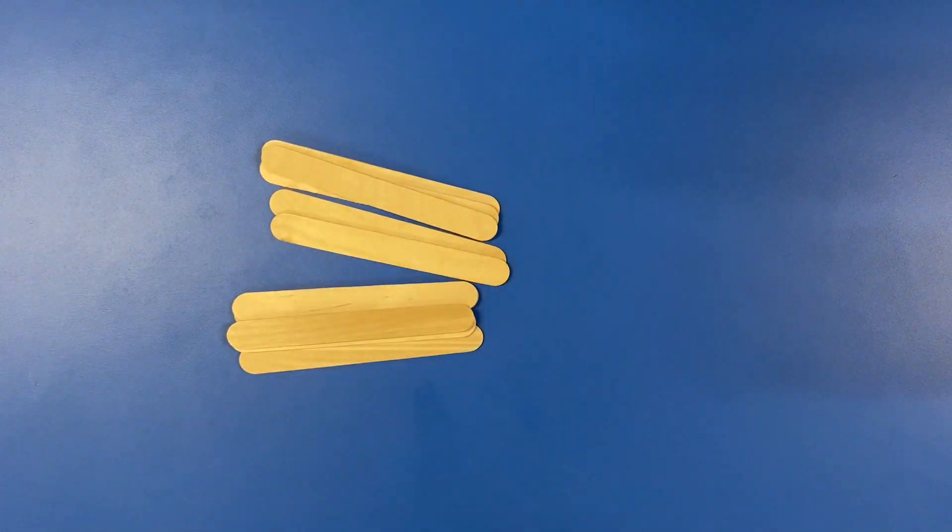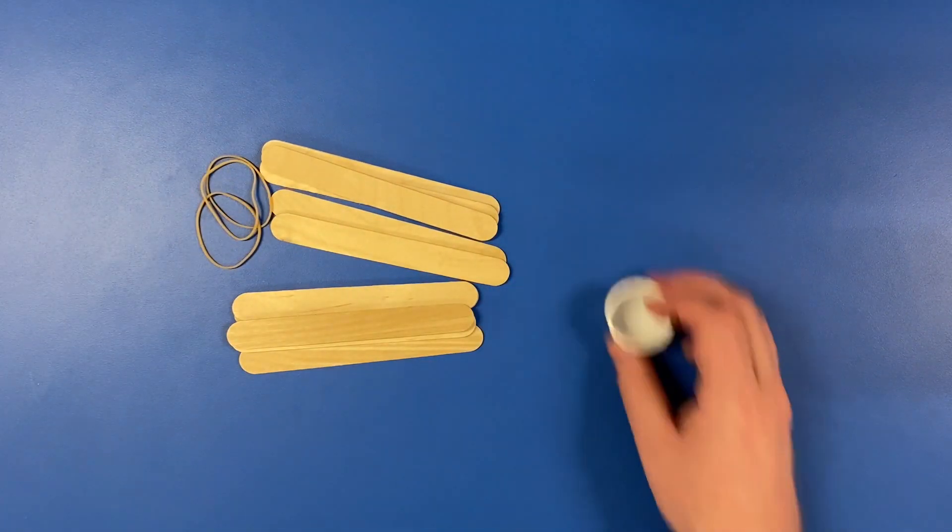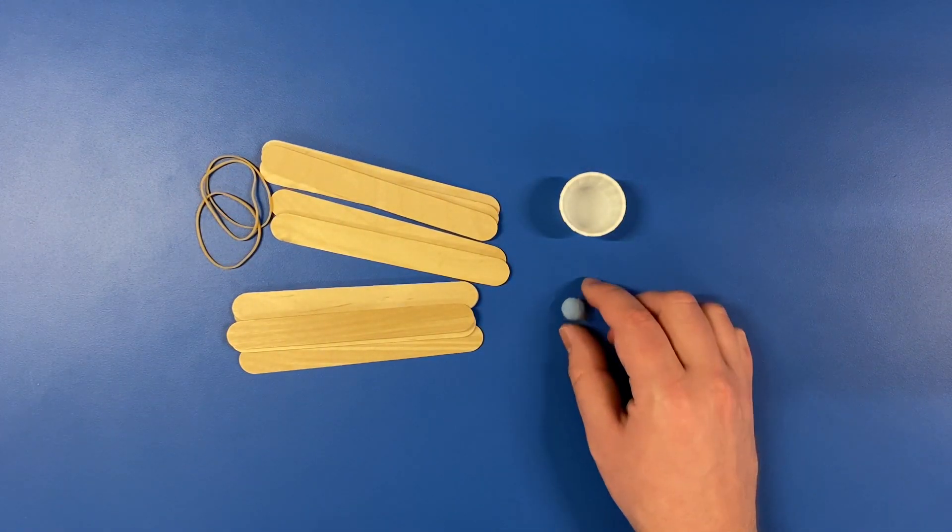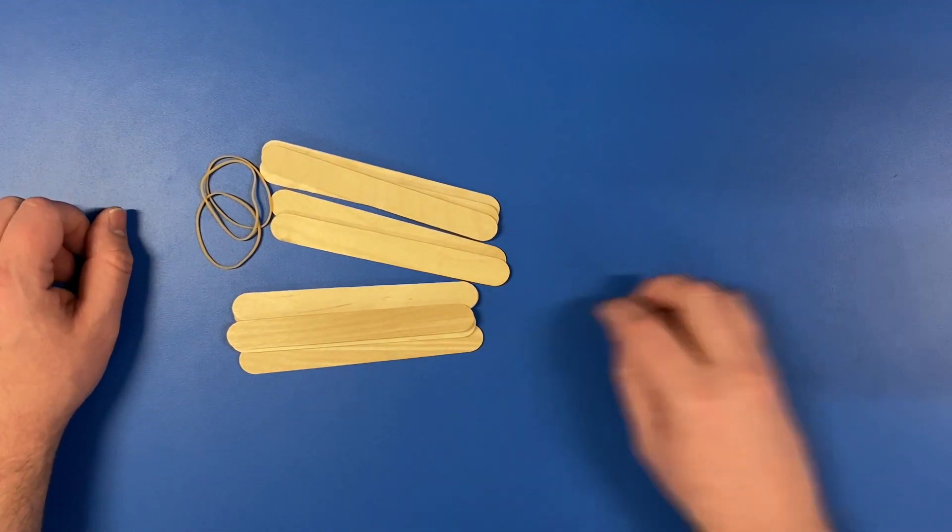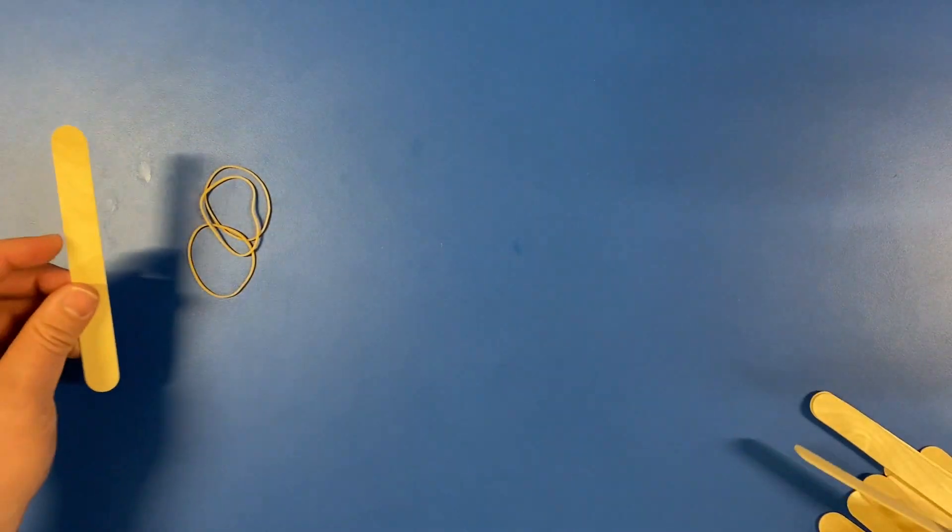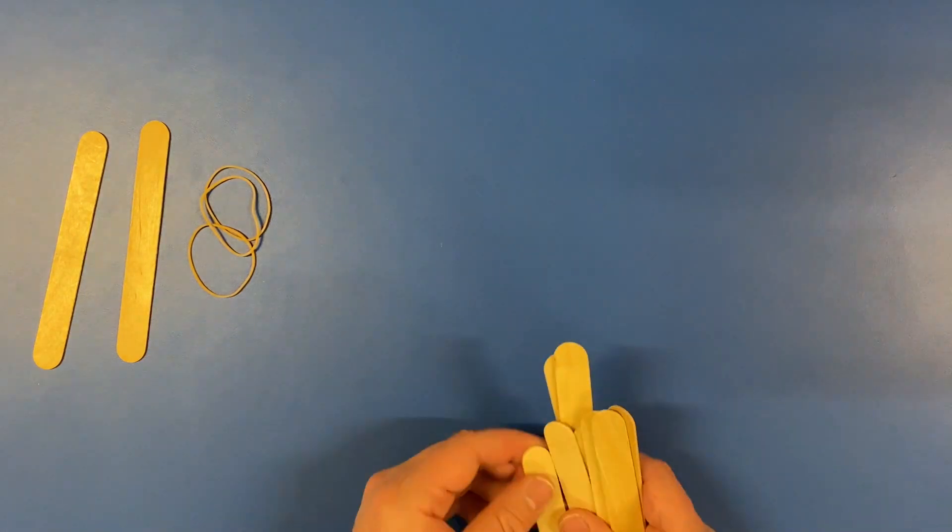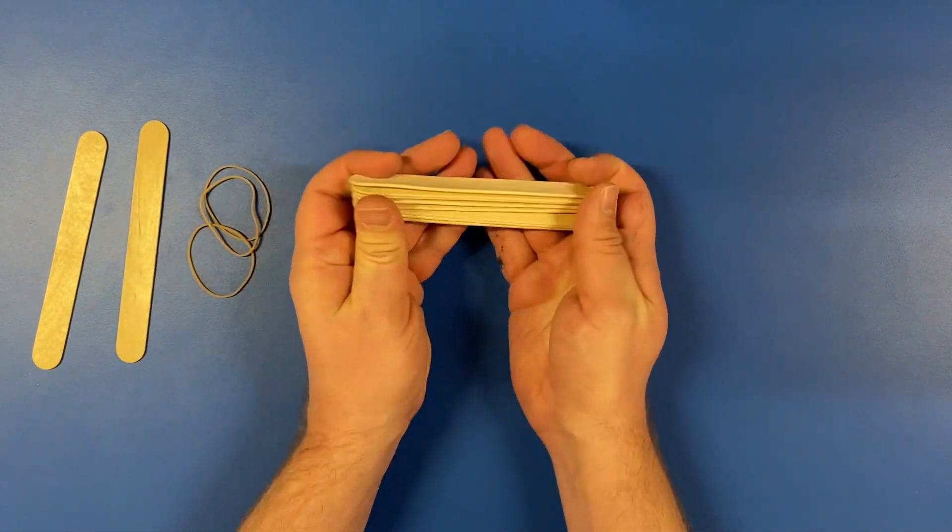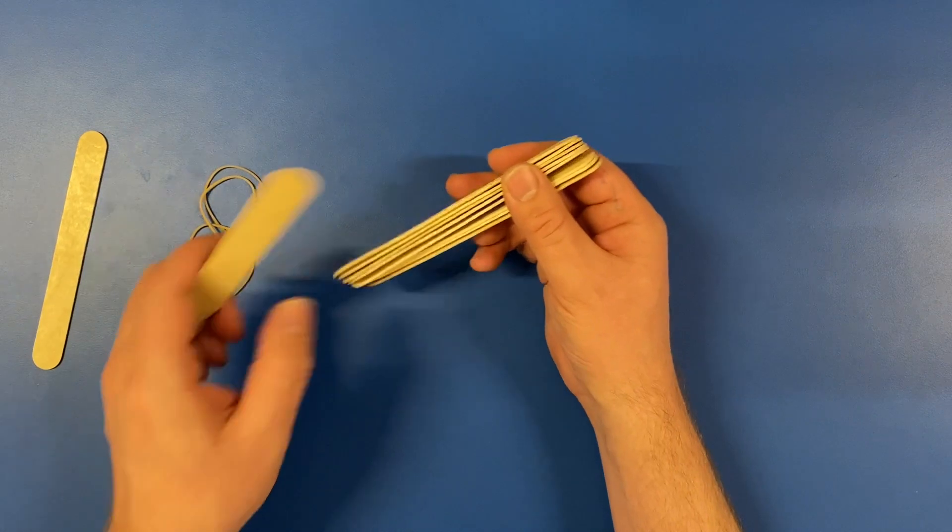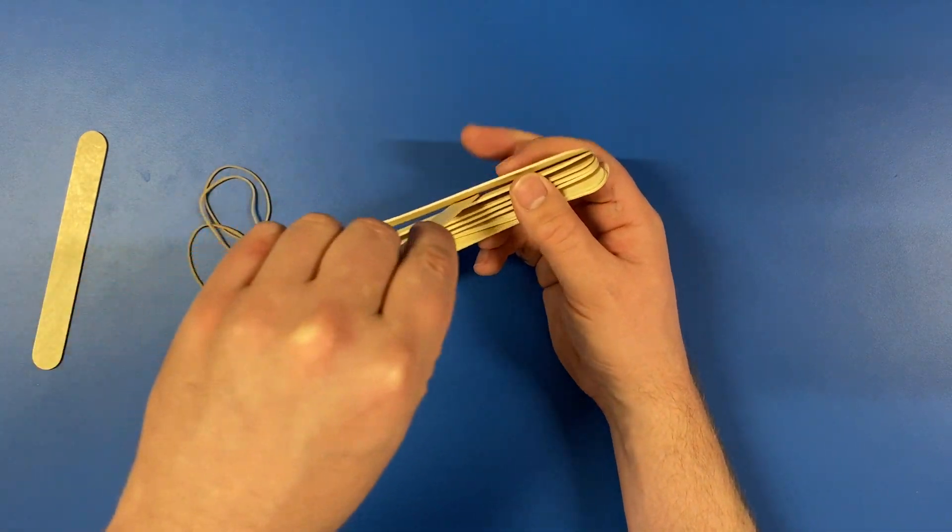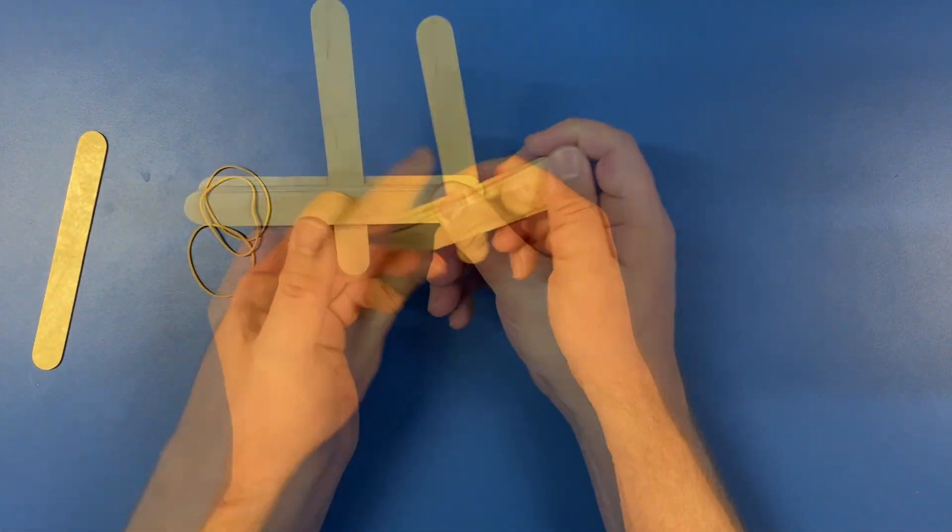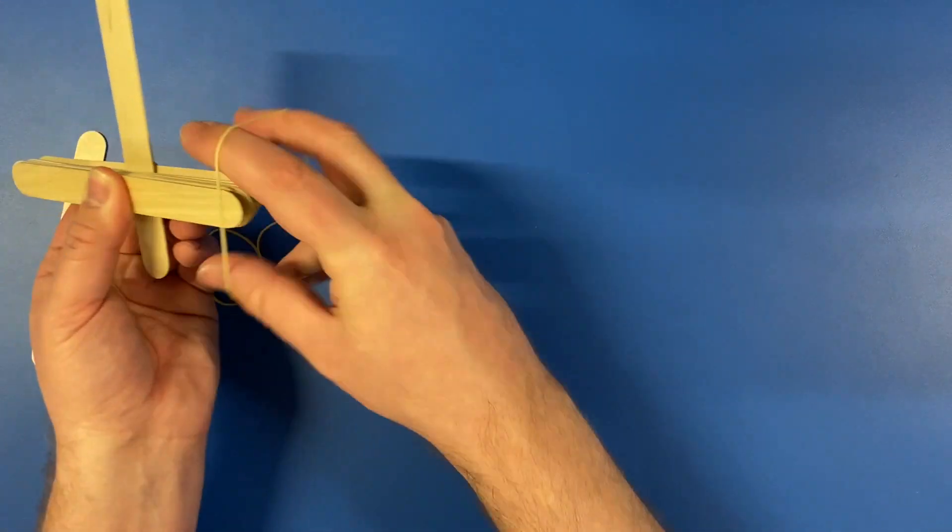On to the catapult. For this, we will need the tongue depressors and a few supplies from the little baggie. Stack all but two of the tongue depressors on top of each other. Slide one of the extras under one end of the stack and rubber band the ends together to hold them in place.